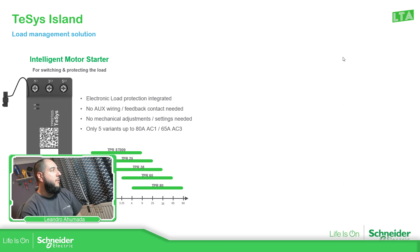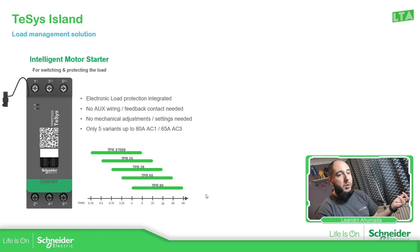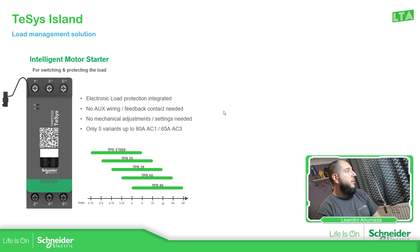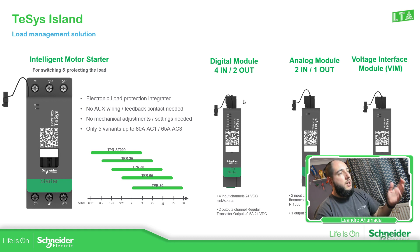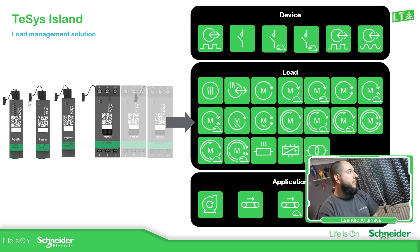The starter module is one of the main components for controlling the motor. We have different sizes depending on the motor power needed, going up to 80 amps. If you need more than that, you'd need to go with the traditional way. We also have digital IOs, analog IOs, and the voltage interface. The combination of these elements gives us different avatars — for application, for load, and for device.